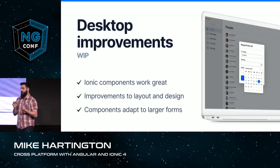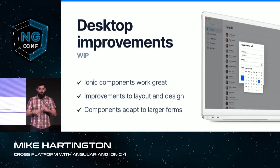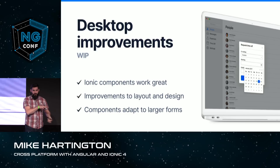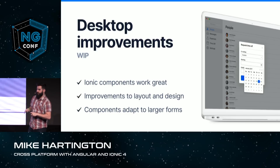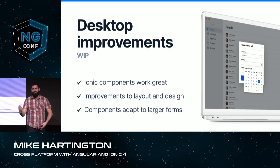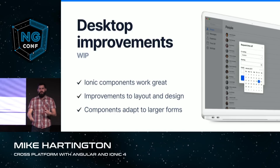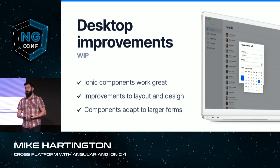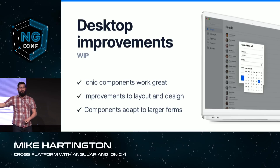We are traditionally focused on mobile, but as progressive web apps and installable desktop progressive web apps become popular with Chrome and even Edge, we want to make sure our components look great not only on the smallest devices but on huge 1080p screens. This is something we are actively looking for feedback on. What have you been building with Ionic on the desktop? What are some pain points? What components do you wish were better optimized for larger screens? Please find me — I want to know your pain points.